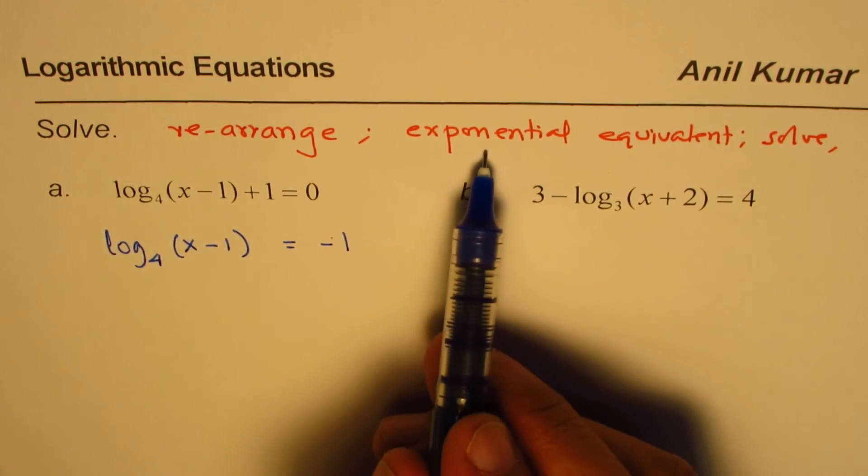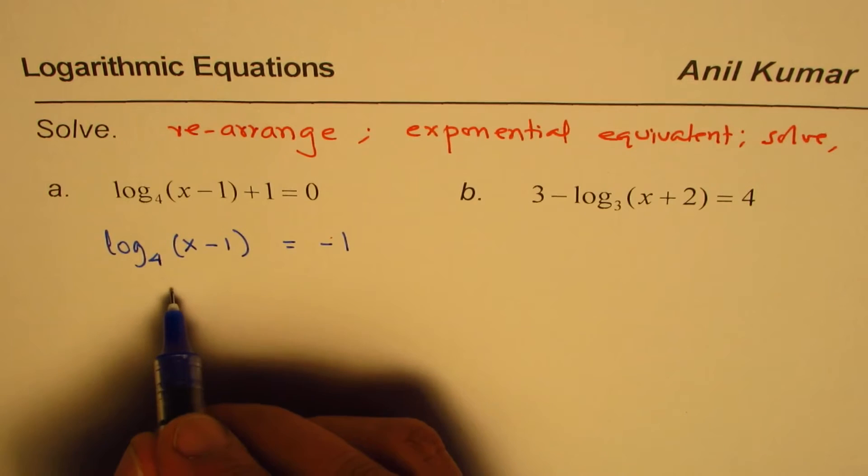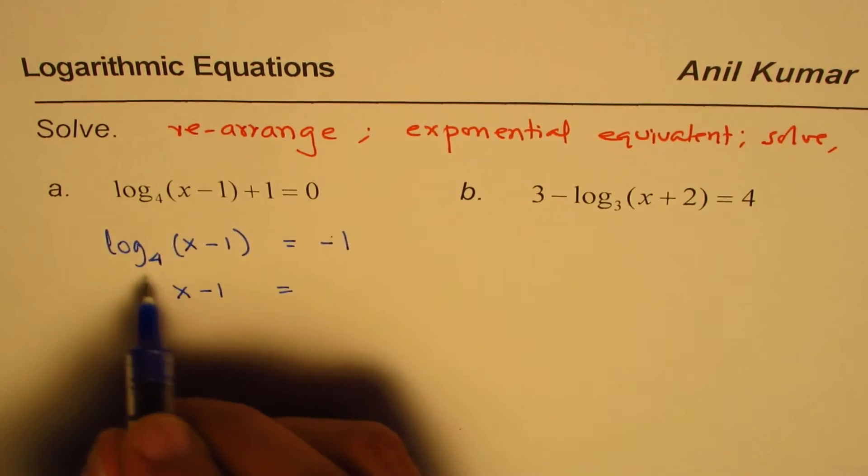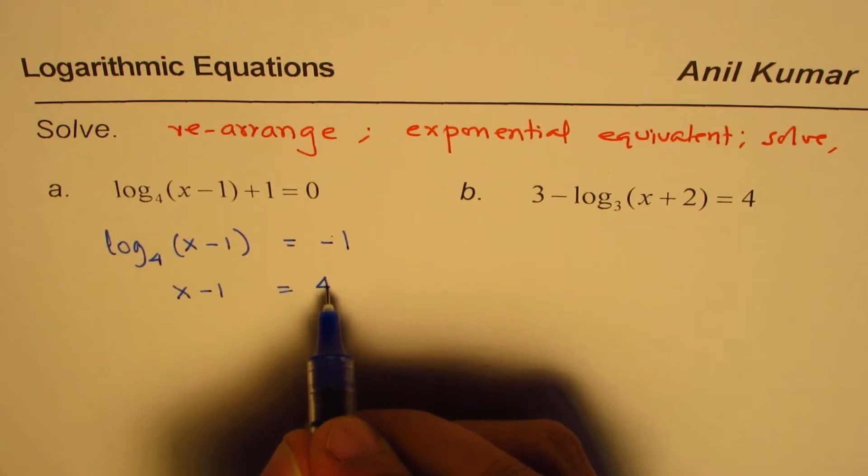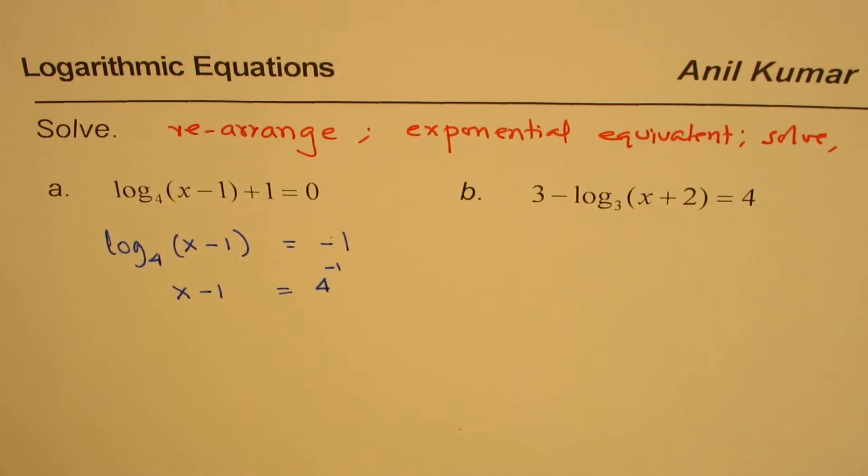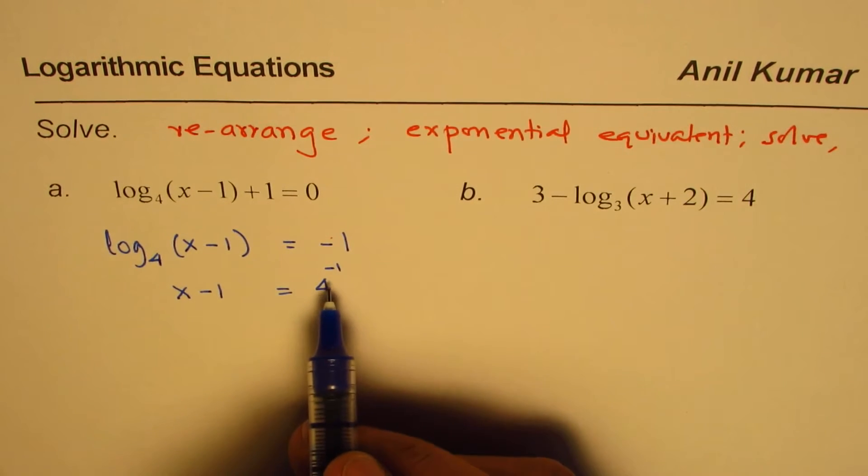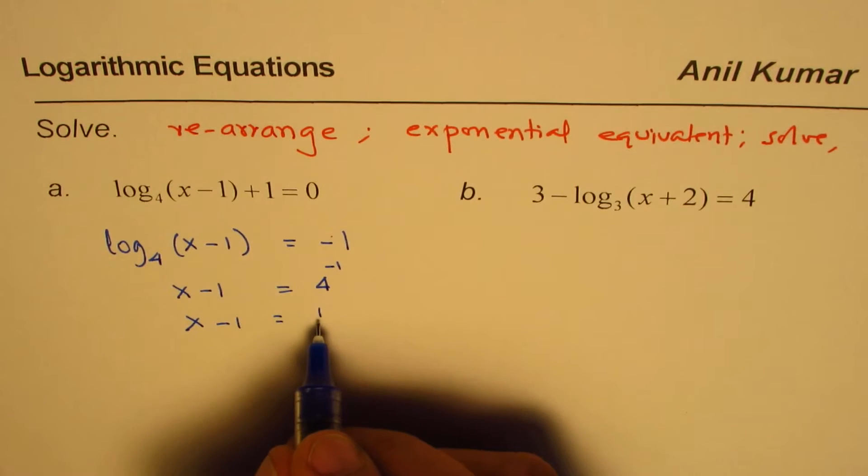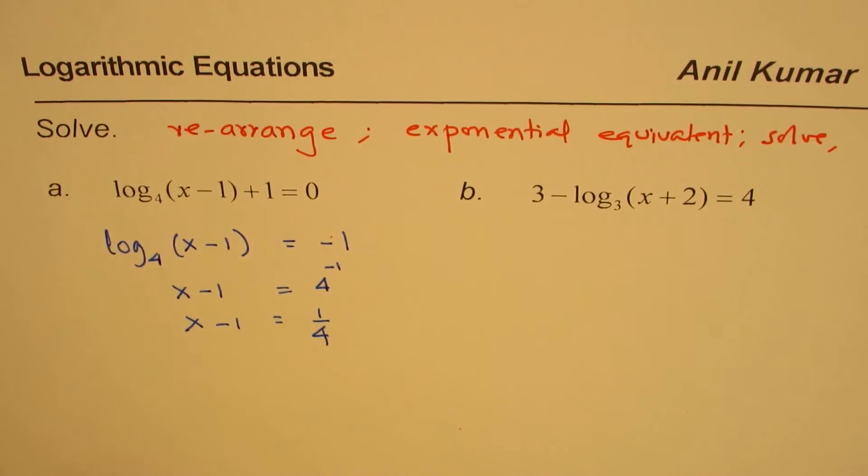Now second step is exponential equivalent. So we know x minus 1 should be equals to 4 to the power of minus 1. Now what is 4 to the power of minus 1? x minus 1 is equals to 1 over 4.